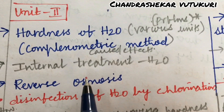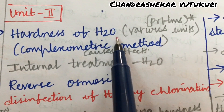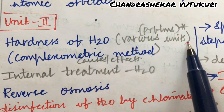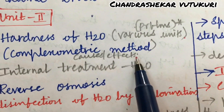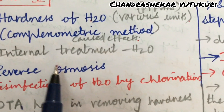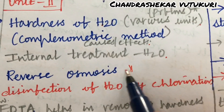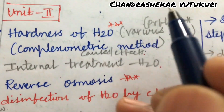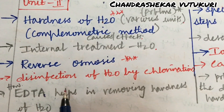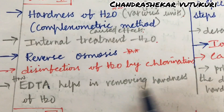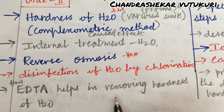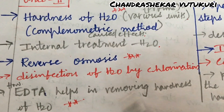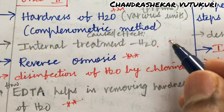You are supposed to score good marks in the first year itself. Hardness of water is said to be from the second unit, and the problems related to it, as well as the various units, the causes and effects of hardness of water, and the internal treatment of water. Reverse osmosis is said to be a very important highlight question, and hardness of water is also a very important highlight question. Disinfection of water by chlorination and how EDTA helps in removing hardness of water is also asked. Sometimes you will get some general questions from unit 2, and you are going to get sure 2 questions from this.